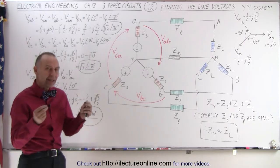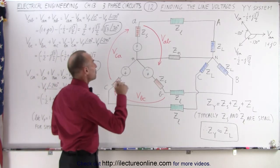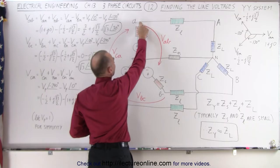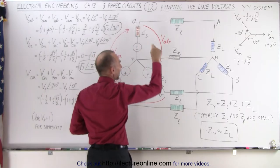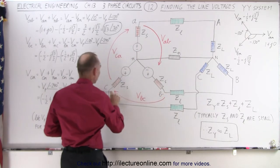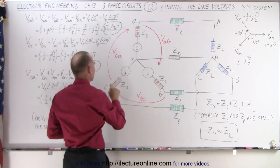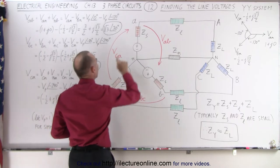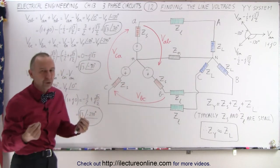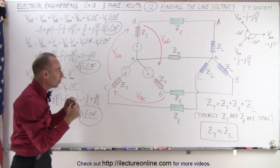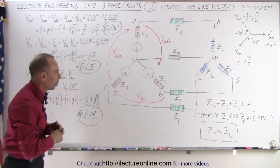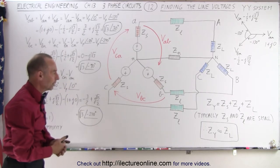If we take a voltmeter and measure the voltage between terminal A and terminal B, or between terminal B and terminal C, and between terminal C and back to terminal A — those are what we call the line voltages: the voltages between the terminals on the source of the generator.